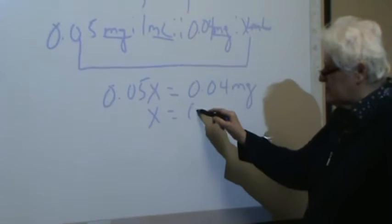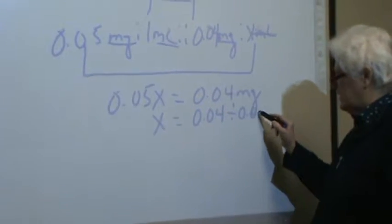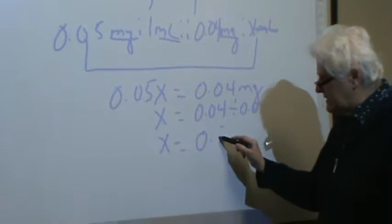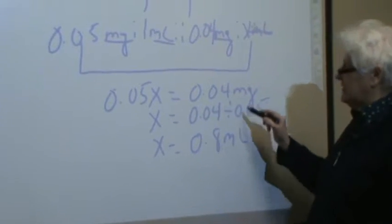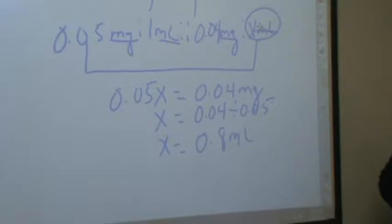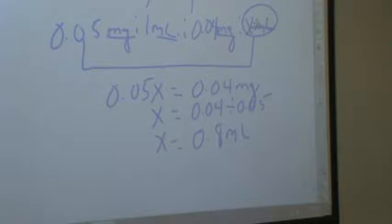Alright, so when you did this, it was 0.04, and you divided it by 0.05, and your answer is going to come out to be 0.8 mils, because that's what we're looking for here. And what kind of syringe would we use for that dosage? Tuberculin. Tuberculin, thank you.